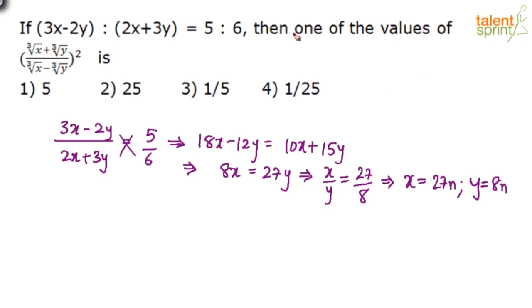That is the reason, if you read the question properly, he says find out one of the values of the given expression. He is not asking us to find the value of the expression, but one of the values. Now, the easiest way to find out one of the values is just to put x equals 27n and y equals 8n because we are not depending on n here. We are taking the common factor out, the highest common factor out, which is n between x and y.